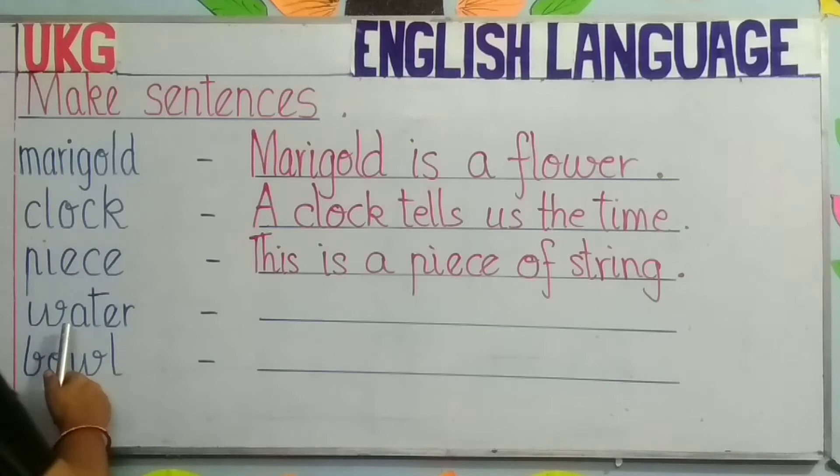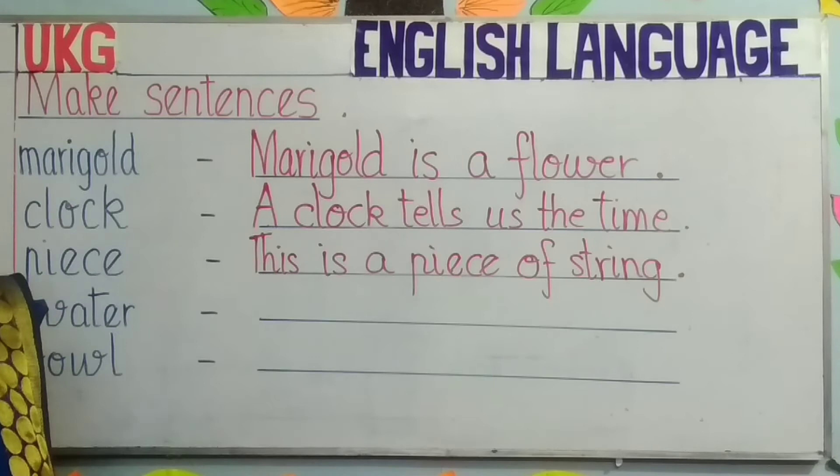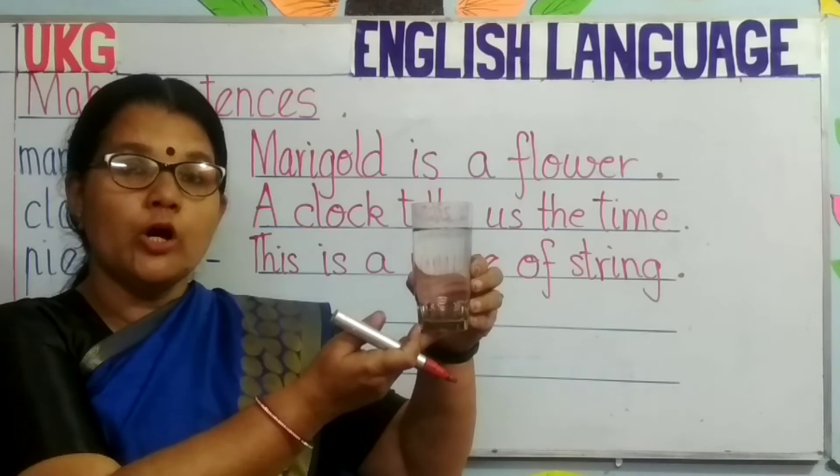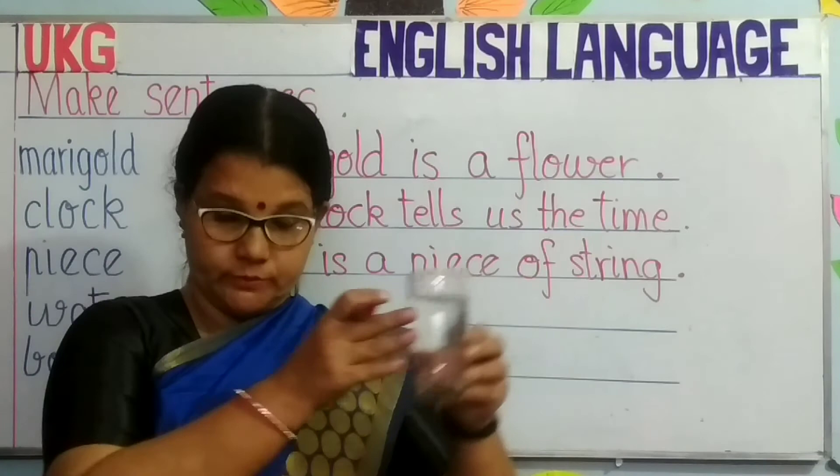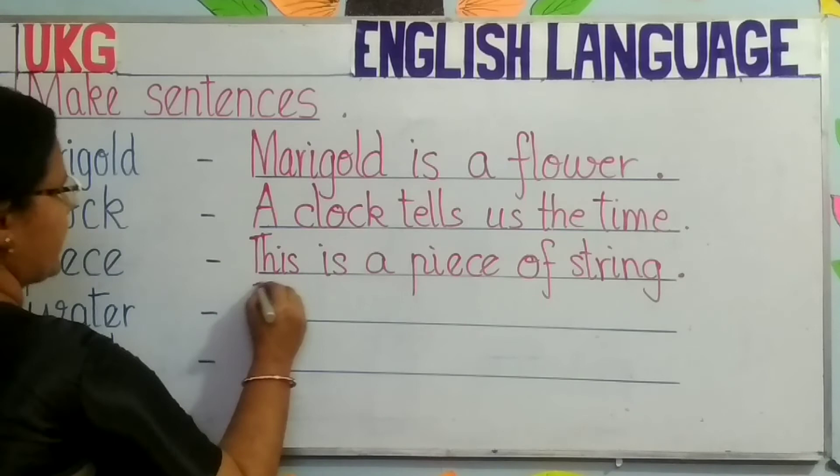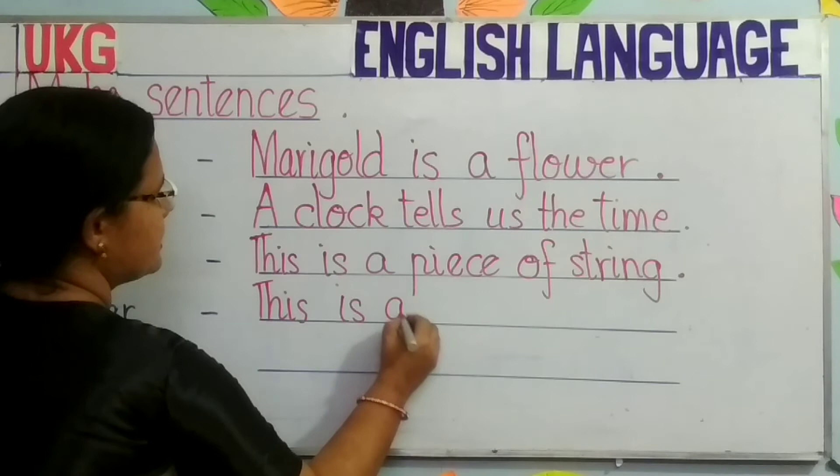I am showing you this glass — it is full of water. So you can write: This is a glass of water. You can also write: the water is cold, the water is hot. I am writing: This is a glass of water. Put a full stop. Begin with a capital letter.